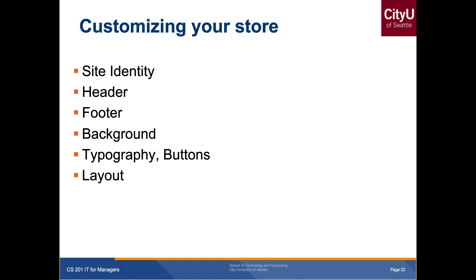When customizing your theme, you can customize your site identity — that includes the logo and the title that appears in the browser tab. The header is what you first see, such as navigation and a welcome section. The footer appears at the bottom, like copyright information. Background can be a solid color, gradient, or background image. Typography covers font size, font color, and so on. Buttons provide actions and triggers for redirecting to a page or submitting form data. Finally, the layout ensures each section has a consistent and appropriate look and feel.